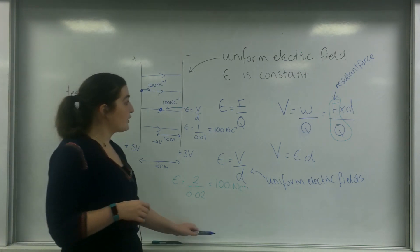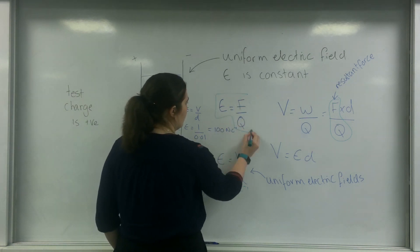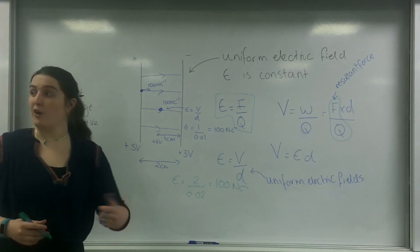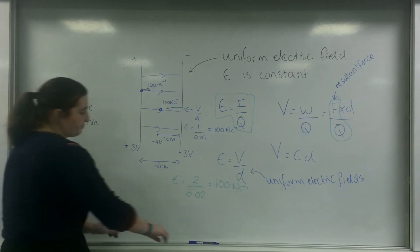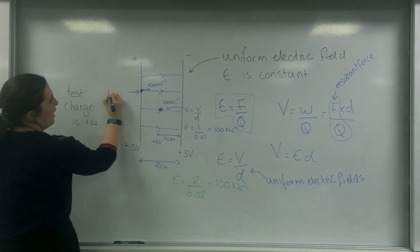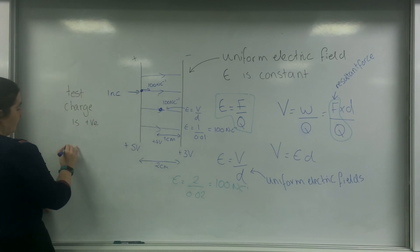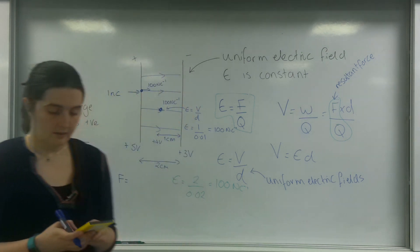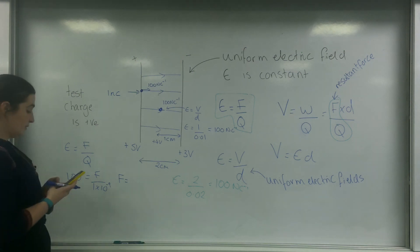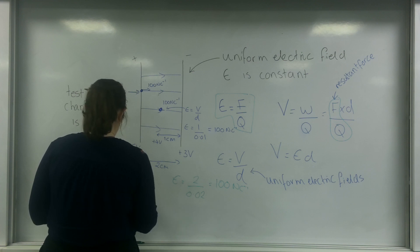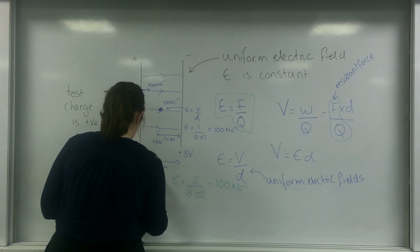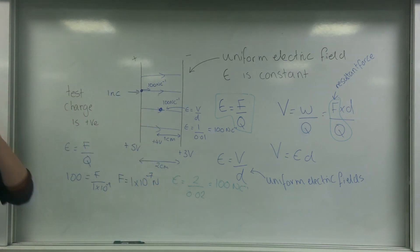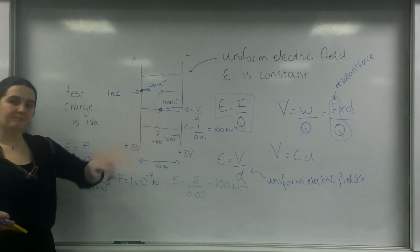And knowing the field strength is really useful, because I can go back to this and I can work out the force that object is feeling. So if I take this, let's say this is going to be one nanocoulomb. I know that E equals force over charge. So 100 is force over 1 times 10 to the minus 9. I'm going to feel that many newtons. I'm going to feel the same amount of force here.